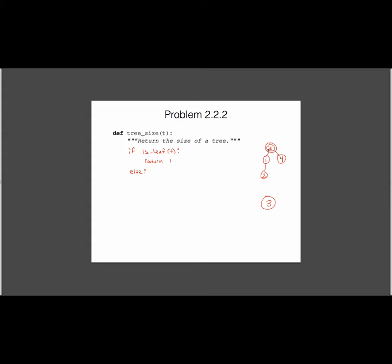And now it also has a set of branches. And so what we want are the sizes of each of our branches added together, plus the one node that we have for the root. So if I was able to get the size of this tree and the size of this tree, then it'd be really easy for me to get the size of my total tree.